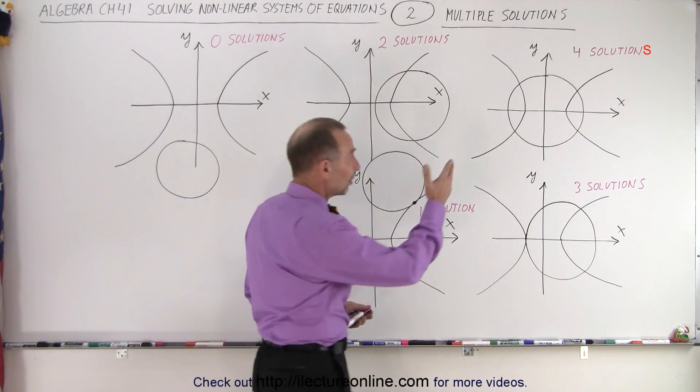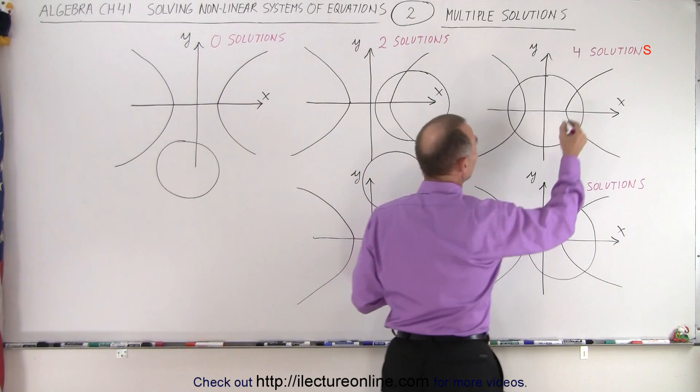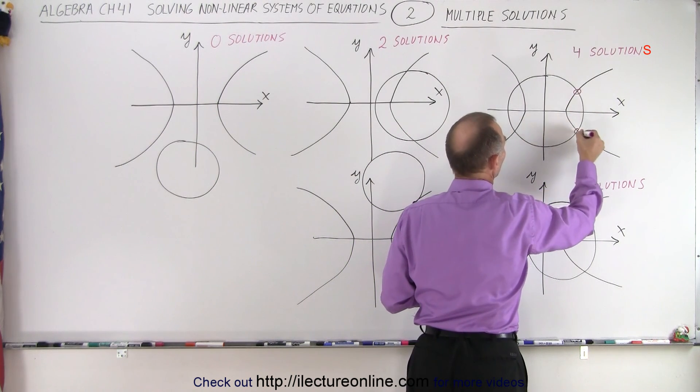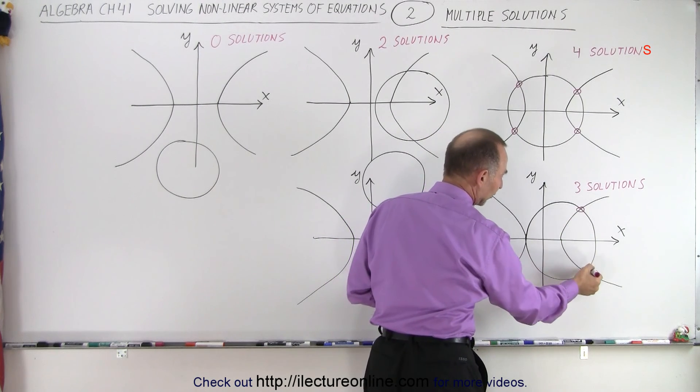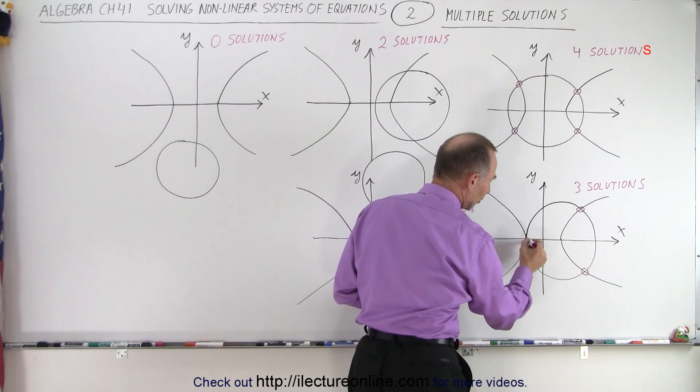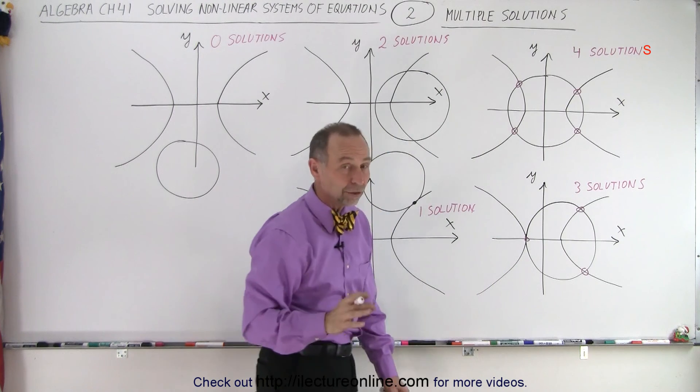In other words, if we have a situation that looks like this, then you'll be looking for four solutions. But it could be that the situation is like this, where now you have two places where they cross and one location where they meet, so now there's only three solutions.